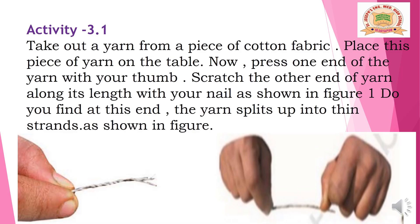Let's start the topic through Activity 3.1. Take out a yarn from a piece of cotton fabric and place it on the table. Press one end of the yarn with your thumb and scratch the other end along its length with your nail, as shown in figure one. You will find the yarn splits up into thin strands, as shown in figure two. Once a single yarn is split, it forms small different thread-like structures.